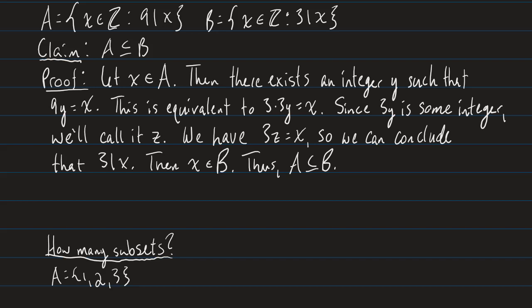Let X be an element of A. If X is an element of A, then there exists an integer Y such that 9Y = X, because A is the set of all X where 9 divides X. This is equivalent to saying 3 × 3 × Y = X. Since 3Y is just some integer, let's call it Z, we have 3Z = X. So we can conclude that 3 divides X, which means X must be in B — the set of all X such that 3 divides X. Thus, A is a subset of B.